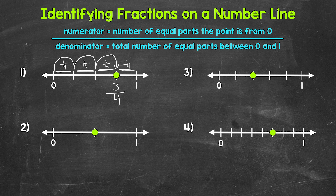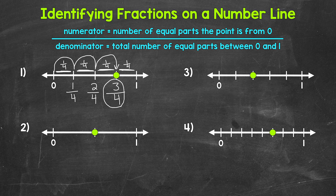To wrap up number one, let's label everything on this number line. We start with zero, which is zero fourths — zero out of the four equal parts. Going from zero to the first tick mark, that's one fourth. Then from zero to the second tick mark is two fourths, two equal parts out of four. Then we have three fourths, which is our fraction for number one. And lastly, four fourths — four out of the four equal parts — which is just one whole, that full distance to one.